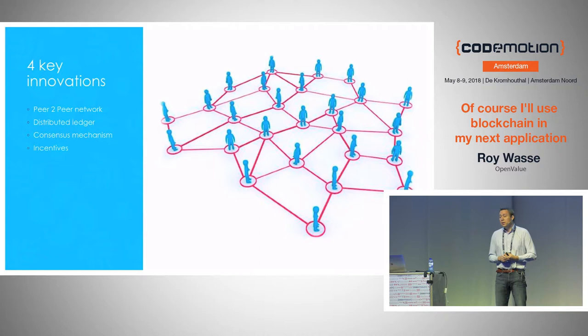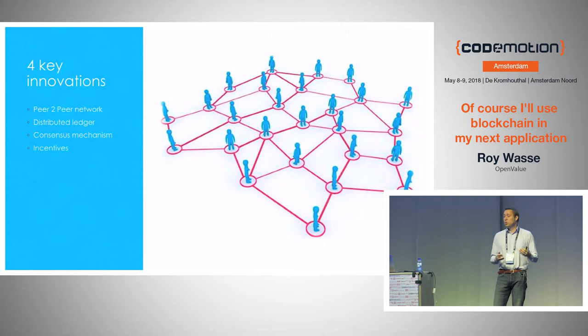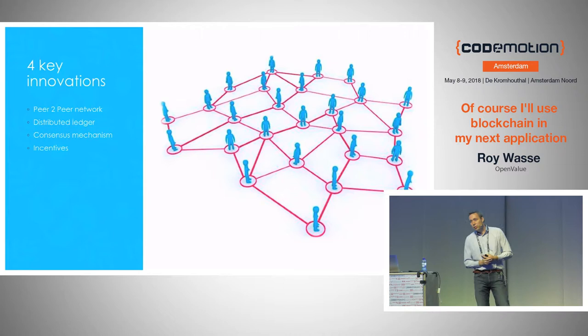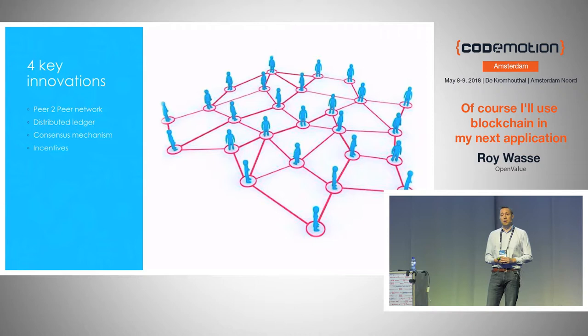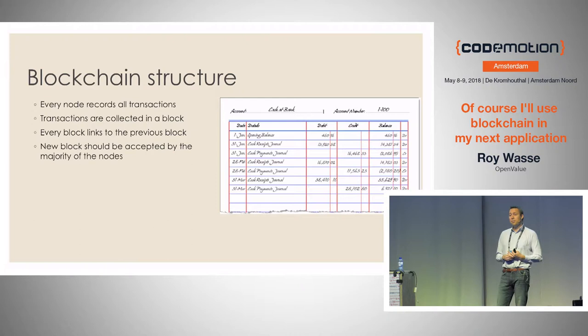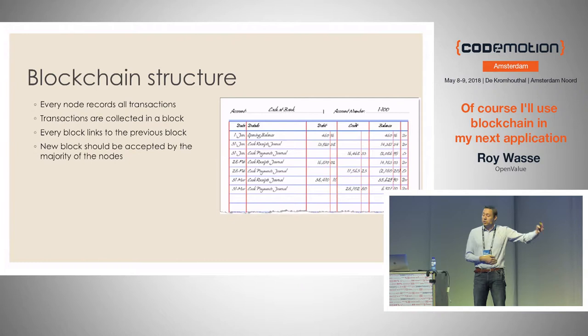What you need in this system is a way to reach consensus about what data to store. The consensus mechanism Satoshi Nakamoto came up with is called Proof of Work, which I'll explain shortly. He also thought of a clever incentive system — a self-reinforcing system based on the concept of mining, where people processing blocks get paid in Bitcoin. Each block contains many transactions — in Bitcoin's case, 2,500 transactions — and each block is linked to the previous one, giving you a chain of blocks.